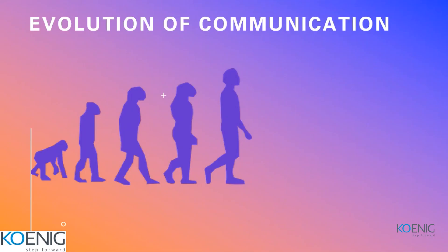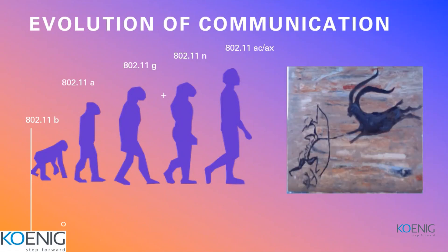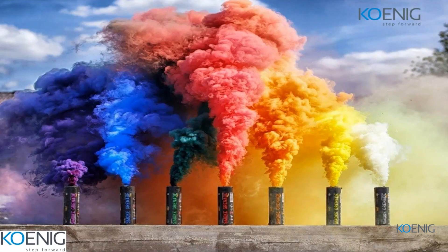Now, the evolution of communication. This picture explains how homo sapiens evolved from apes — similarly, wireless communication also evolved, from 802.11b, 11a, 11g up to 11ac and 11ax. Communication basically started from cave drawings: when there was no mode of communication, we used drawings to express feelings, then different colors of smoke to broadcast information, and then birds as a mode of communication.